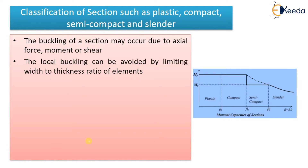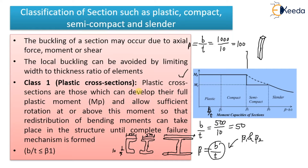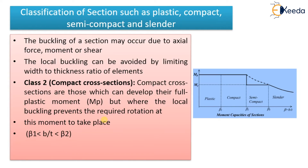Class 2 is known as the compact cross section. Compact cross sections are those which can develop their full plastic moment, but where local buckling prevents the required rotation at this moment from taking place. In Class 1 there was full plastic moment development with sufficient rotation, but in Class 2 the full plastic moment is developed while local buckling restricts the rotation. The b/t value will be greater than beta 1 and less than beta 2.